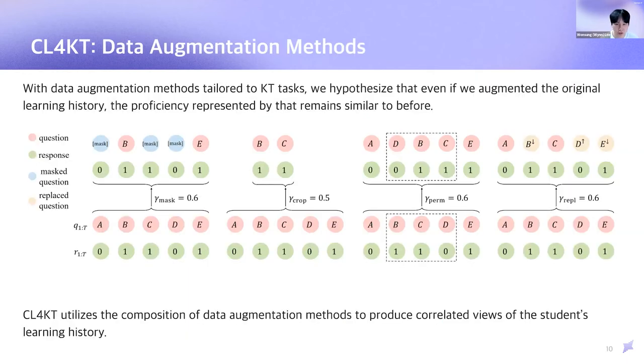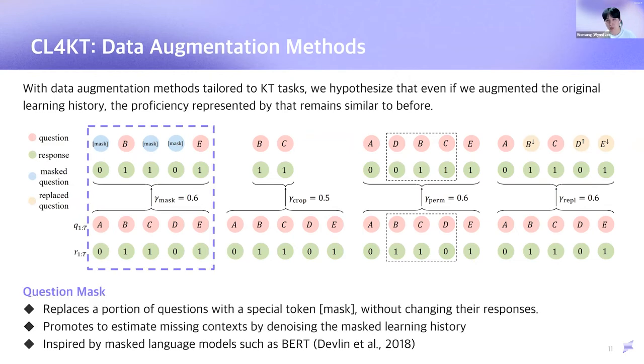This page describes the idea of augmentation method that is used in this paper. With data augmentation method tailored to knowledge tracing tasks, we hypothesize that even if we augmented the original learning history, the proficiency represented by that remains similar to before. Our model utilizes several data augmentation together to produce correlated views of the student's learning history. Next, I'm going to describe each augmentation method in more detail.